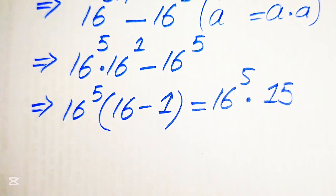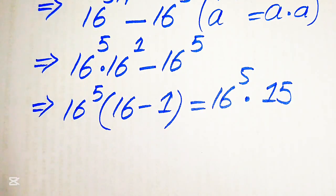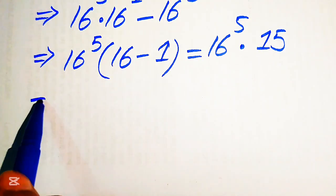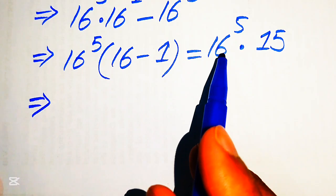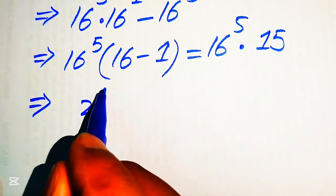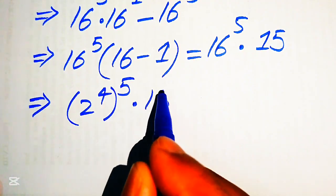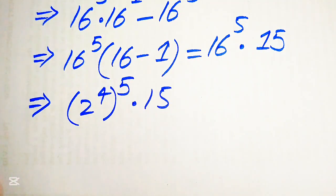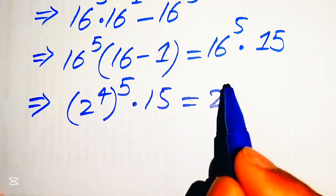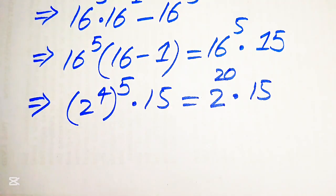Further in the next step we need more simplifications. We rewrite 16 as 2 to the power of 4 — since 16 equals 2 to the power of 4 — and its exponent is 5, multiplied by 15. When we multiply these two exponents it will be written as 2 to the power of 20, multiplied by 15.